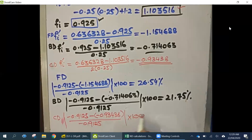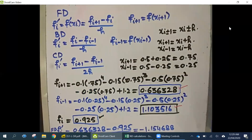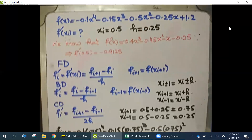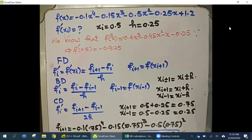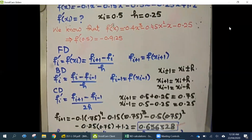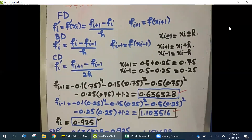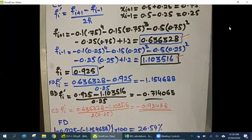So these are the results. In summary, the procedure is: we are given the function, we calculate the exact value of the derivative which we use for the relative error, then we apply the forward difference, backward difference, and central difference formulas, gather the required data, plug those values into the derivative formulas, calculate the result, and then compute the error.